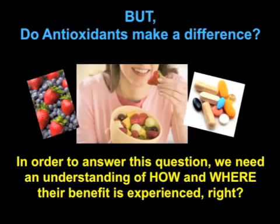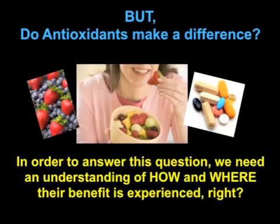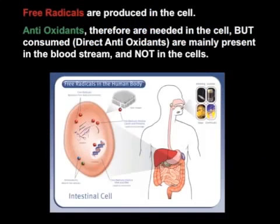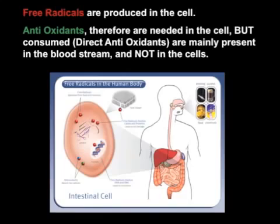Do antioxidants make a difference in the free radical equation? The answer is yes, they do. But we have to understand how and where they work. We now know that free radicals are produced in the cells, so antioxidants are needed in the cell. But when we consume these direct antioxidants, they're mostly present in the bloodstream and not within the cell. So we have to look for a different solution.